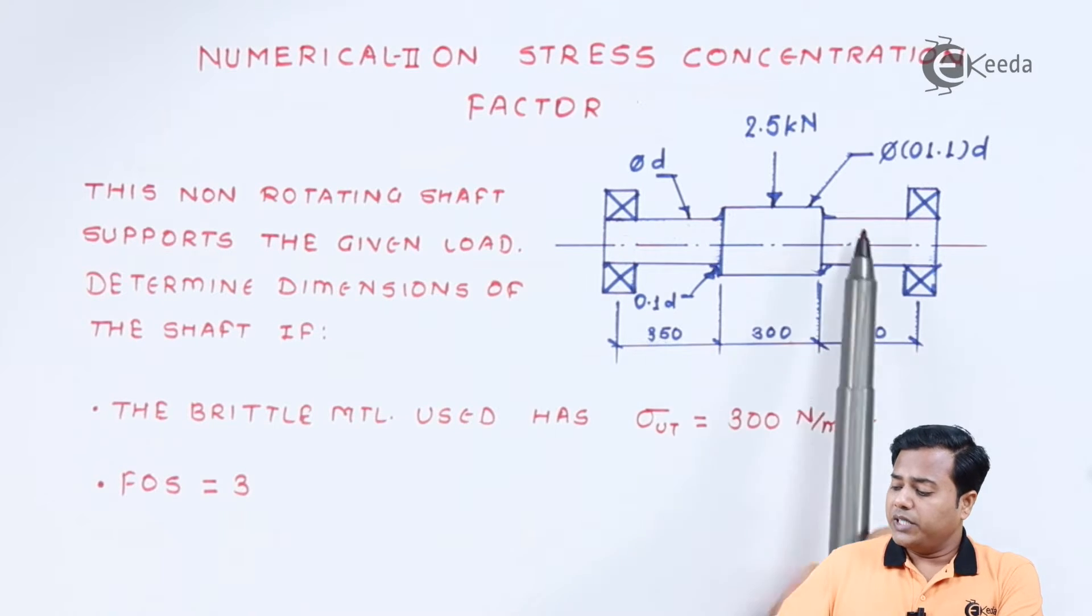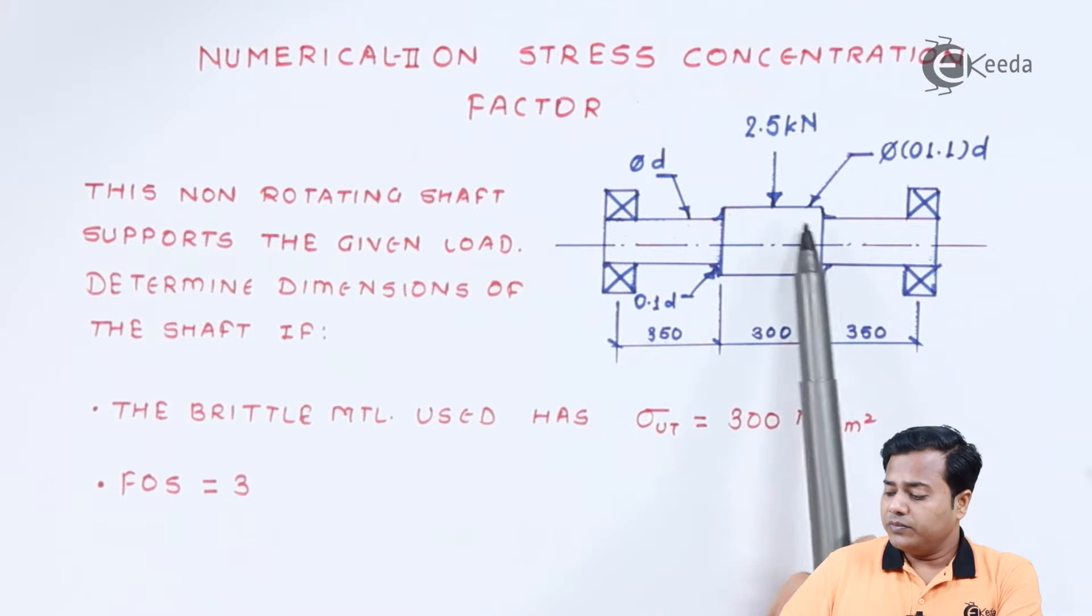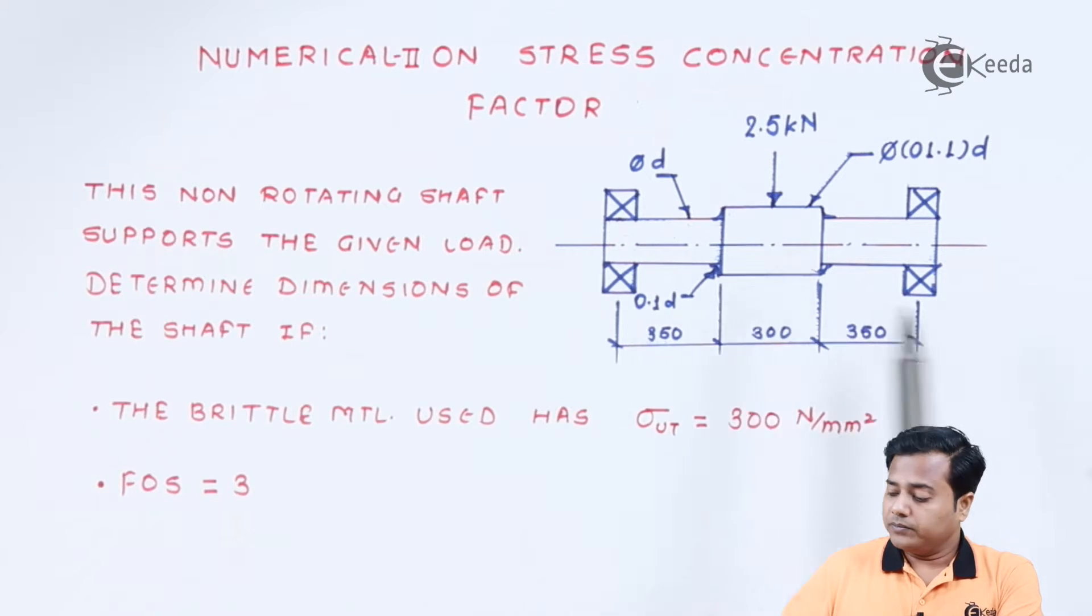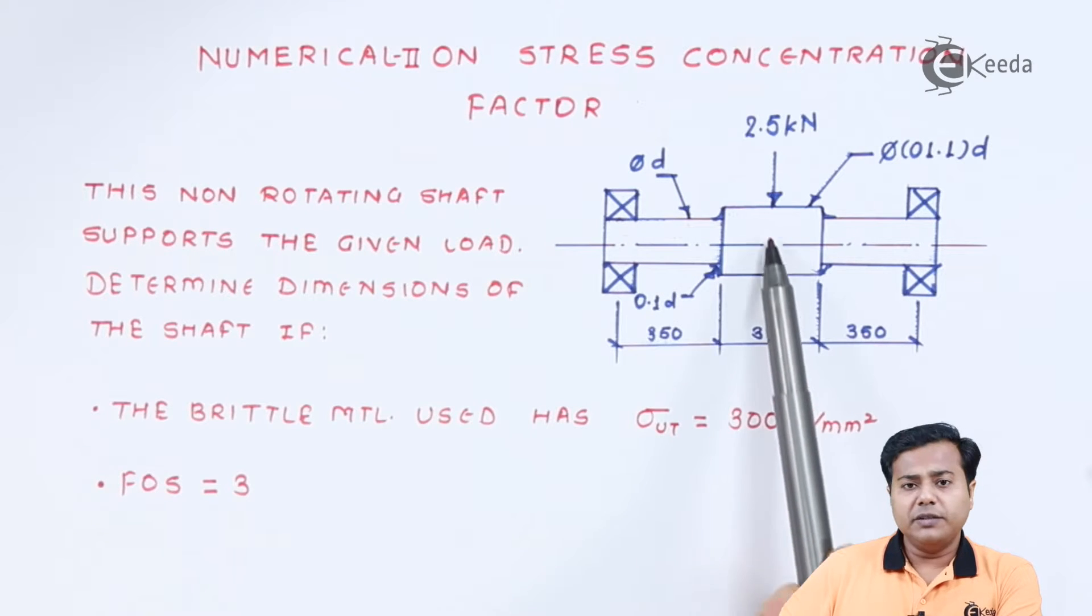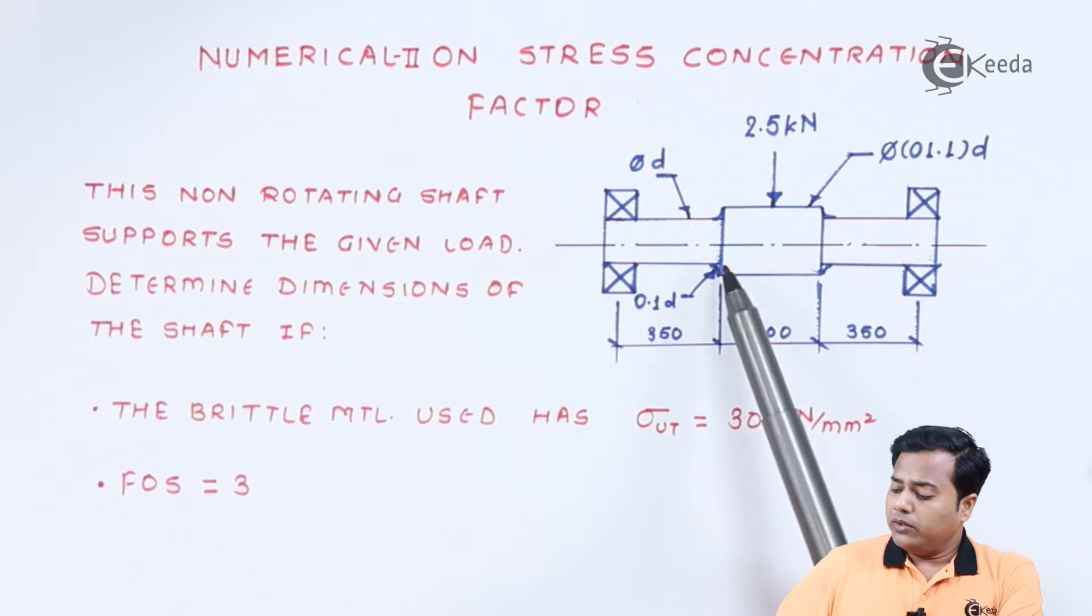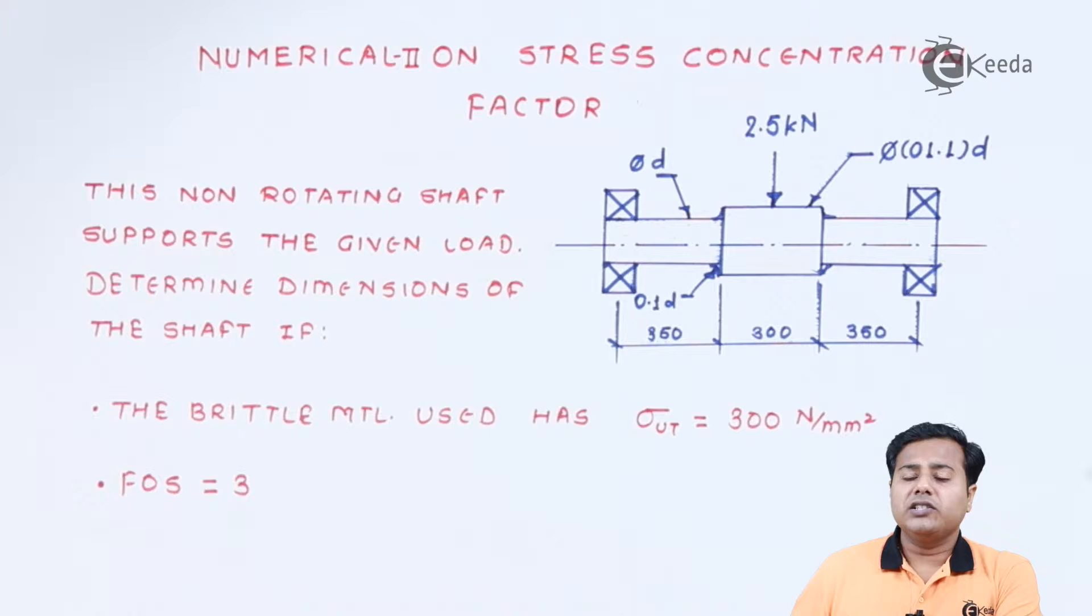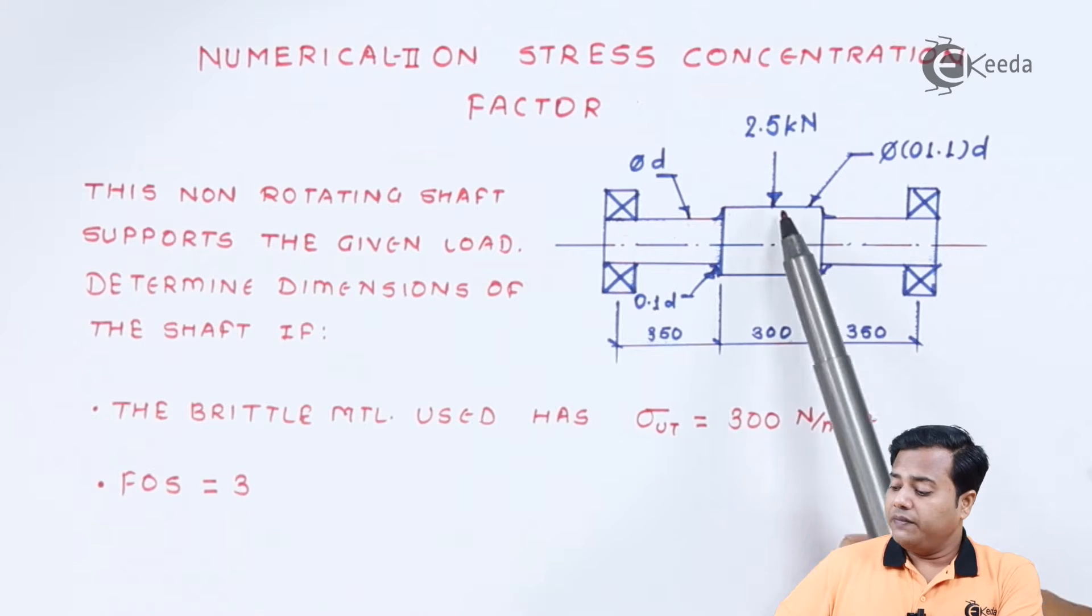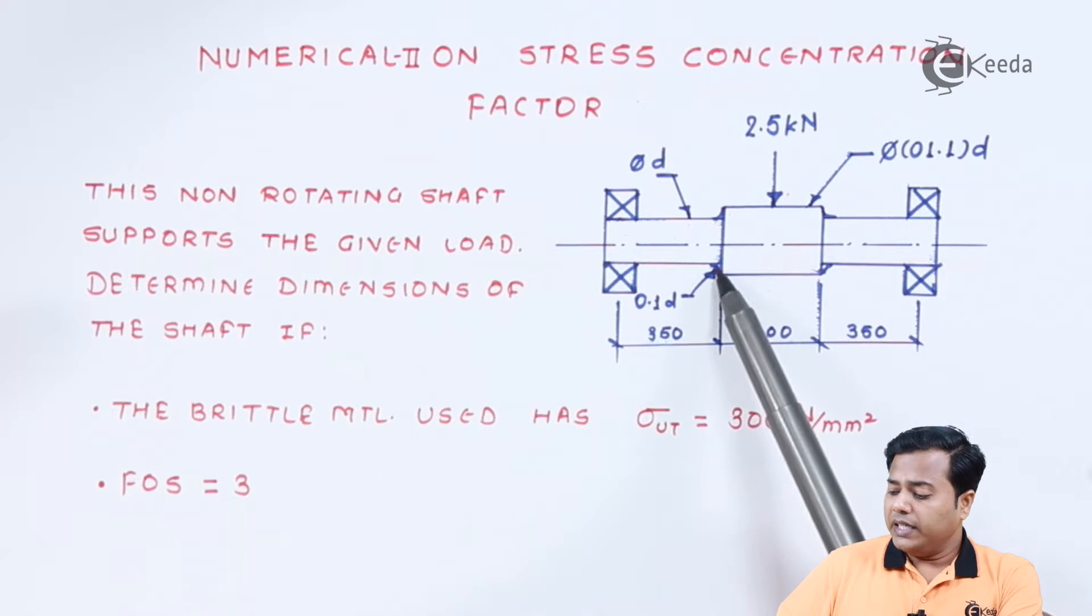We need to consider this stress concentration factor. It is very clear that from the given example there is a variation of cross section only in this region which is the middle region because the main shaft has the diameter D whereas the middle portion has the enlarged dimension. Also the radius or the fillet radius has the variation. So these are the two regions where the failure is prominently possible: the middle portion and the fillets.